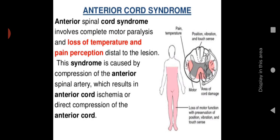Anterior cord syndrome involves complete motor paralysis and loss of temperature and pain perception distal to the lesion. It is caused by compression of the anterior spinal artery due to trauma, resulting in anterior cord ischemia or direct compression of the anterior cord.